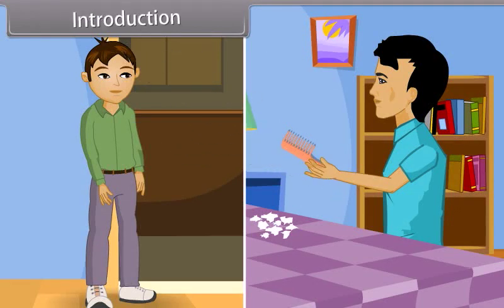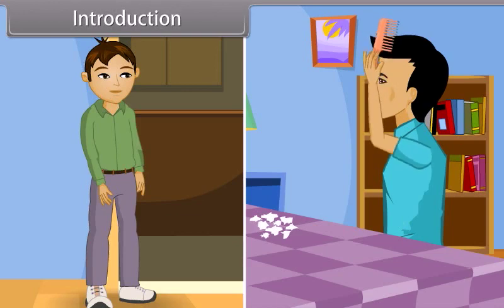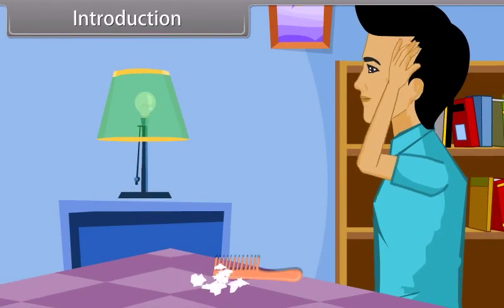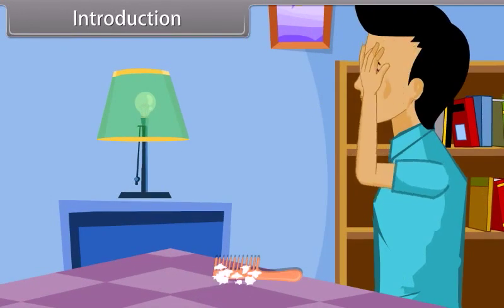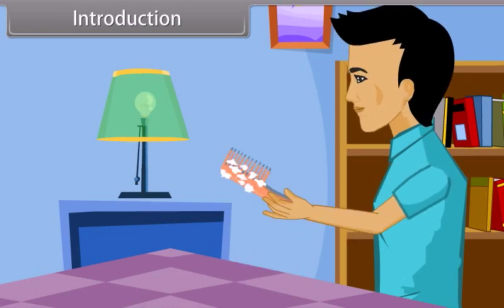Amit and Sanjay are planning to purchase some articles from the market. Sanjay is ready and waiting for Amit. Amit is combing his hair. After combing, when he puts the comb on the table and again picks the comb, he gets surprised.